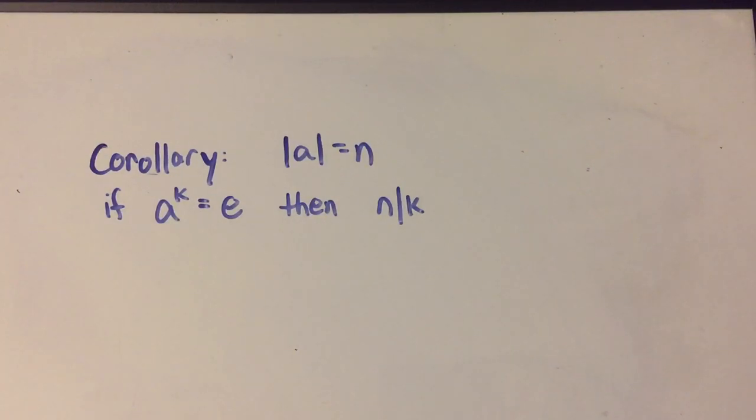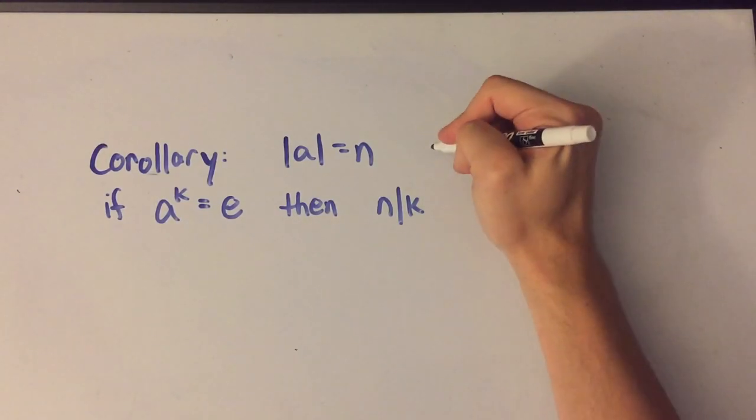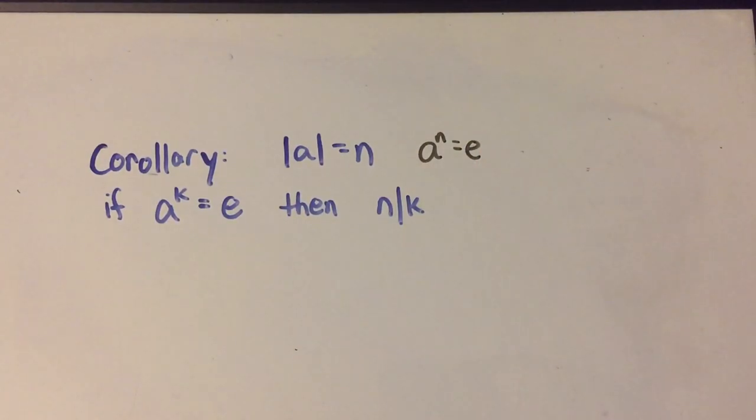So I'm going to use that fact when I prove this. This statement says if I have an element a in a group whose order is n, and just remember that all that means is if I take a to the n it's the identity element and n is the smallest value that makes this true.